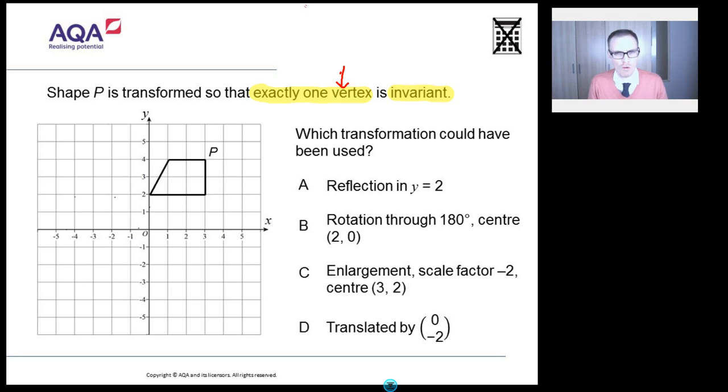Well vertex, or vertices if it's plural, is just a posh word for corner. So we're dealing with corners here. So exactly one corner is, and here's the biggie, invariant. What the flipping heck does invariant mean?